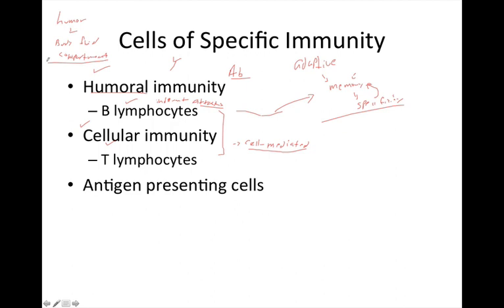T lymphocytes carry out cellular immunity — meaning T cells actually attack cells directly. A good example is virally infected cells: when a virus infects a cell, it takes over that cell and converts it into a factory that produces more viruses, which then escape and infect surrounding cells. T lymphocytes destroy those factories, thereby destroying the ability of viruses to reproduce once they've infected cells.